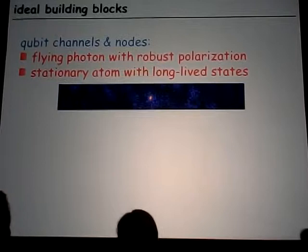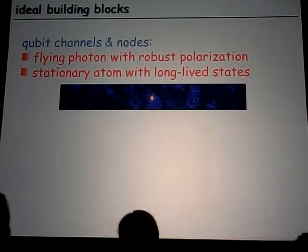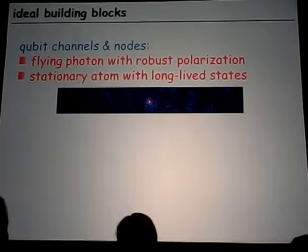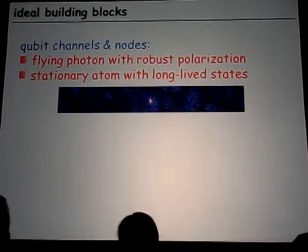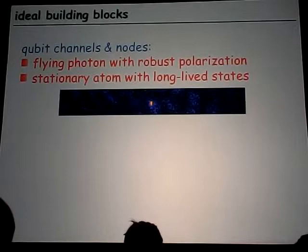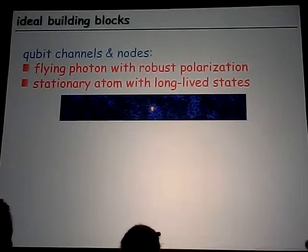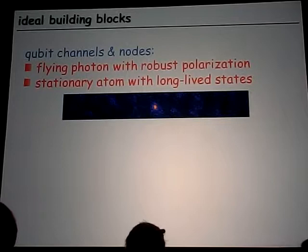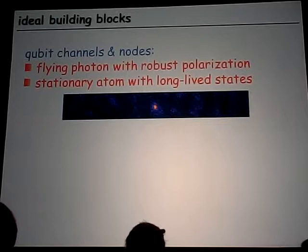So what is the implementation? We need channels and nodes. In our case, the channels are photons propagating through optical fibers — a flying photon. The information is encoded as a polarization state of the photon, though it doesn't need to be polarization; it can also be a time-bin encoding. In our case, it is just polarization. The stationary memory is a single atom — a stationary atom with long-lived internal states, so it can keep the information and maintain coherence over a very long time. This movie shows a single atom quasi-permanently trapped at rest at some point in space.